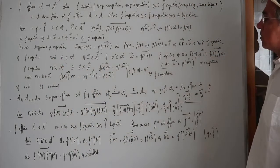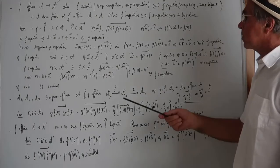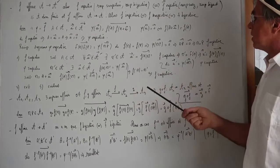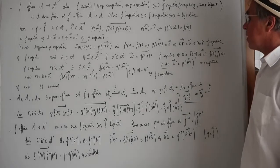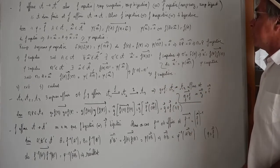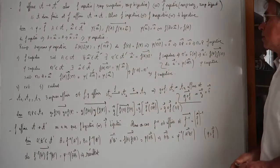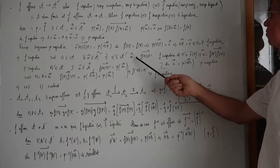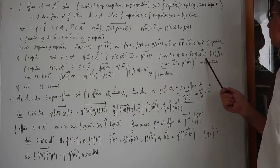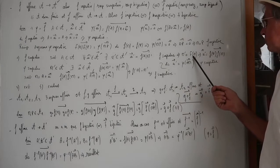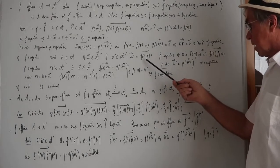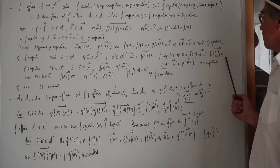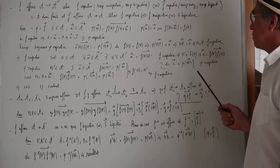Supposons que F soit surjective. Toujours A appartenant à A, je prends U' appartenant à la direction de A'. Il existe M' tel que U' = vecteur F(A)M', par propriété des espaces affines. Comme F est surjective, M' = F(M) pour un certain M. Donc U' = vecteur F(A)F(M) = Φ(AM), donc Φ est surjective. Inversement, si Φ est surjective, prenons M' appartenant à A'. Il existe U dans la direction de A tel que vecteur F(A)M' = Φ(U). Je prends M = A + U, alors vecteur F(A)F(M) = Φ(AM) = Φ(U) = vecteur F(A)M', donc F(M) = M', et F est surjective.